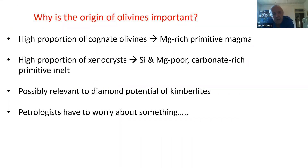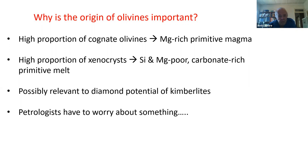Why is this important? Firstly, if most olivines are cognate, this implies that primitive kimberlite magmas are very magnesium-rich. If most of them are xenocrysts, it suggests the primitive magmas are magnesium- and silica-poor and carbonate-rich. It's also been suggested that the proportion of xenocryst olivines may be relevant to understanding the diamond potential of kimberlites — and of course, petrologists have to worry about something.